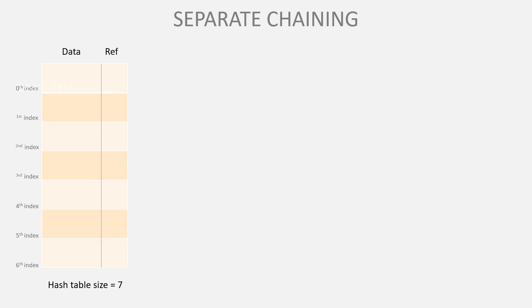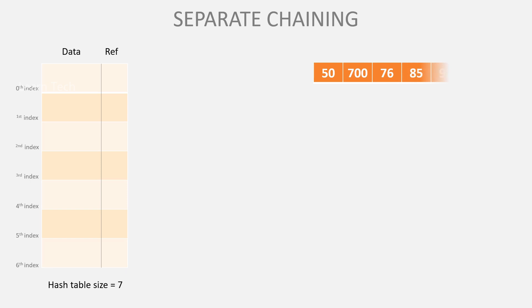Normally, when you use a hash table, we will use two parts. Now we can insert some data. The new data values are: 50, 700, 76, 85, 92, 73, and 101 — these are the random numbers we will use.